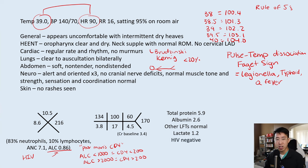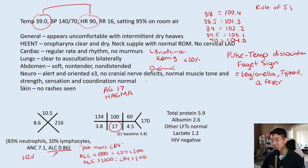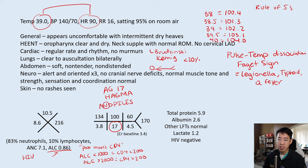On her basic metabolic panel: sodium 134, potassium 3.8, chloride 100, bicarb 17, BUN 60, creatinine 4.5 from a baseline of 3.4, and glucose 170. Protein 5.9, albumin 2.6, LFTs normal, lactate 1.2. The most notable finding is metabolic acidosis due to the decreased bicarb. Whenever you see metabolic acidosis, calculate the anion gap: 134 minus 100 minus 17 equals an anion gap of 17, placing us firmly in the realm of a high anion gap metabolic acidosis. The patient's uremia is most likely the cause.